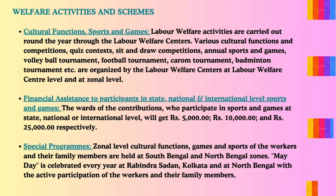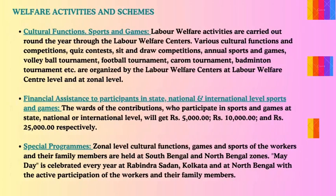Welfare activities and schemes: cultural functions, sports and games — labor welfare activities are carried out round the year through the labor welfare centers. Various cultural functions and competitions including quiz contests, sit-and-draw competitions, annual sports and games, volleyball, football, carrom, and badminton tournaments are organized at labor welfare center level and zonal level. Financial assistance is provided to workers' wards who participate in sports at state, national, or international level — 5,000, 10,000, and 25,000 rupees respectively. Zonal level cultural functions and games are held at South Bengal and North Bengal zones. May Day is celebrated every year at Rabindra Saidan, Kolkata, and at North Bengal.